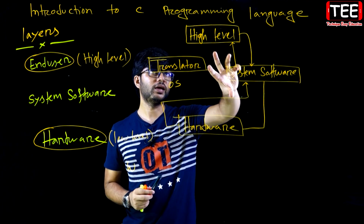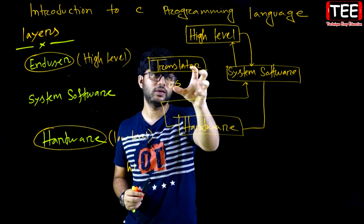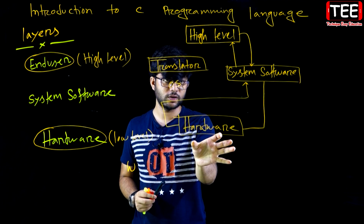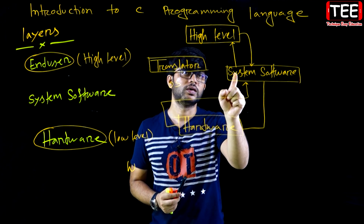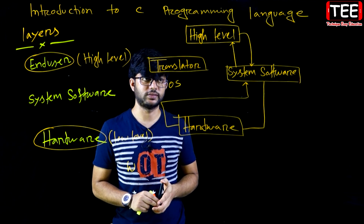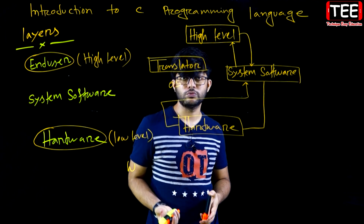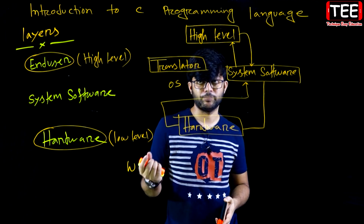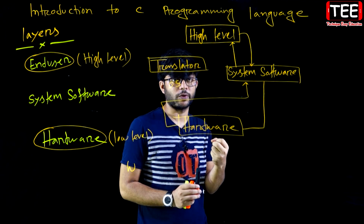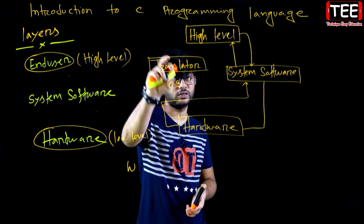The system software process goes from high-level to low-level. The system software processes the high-level instruction and converts it to low-level for hardware.